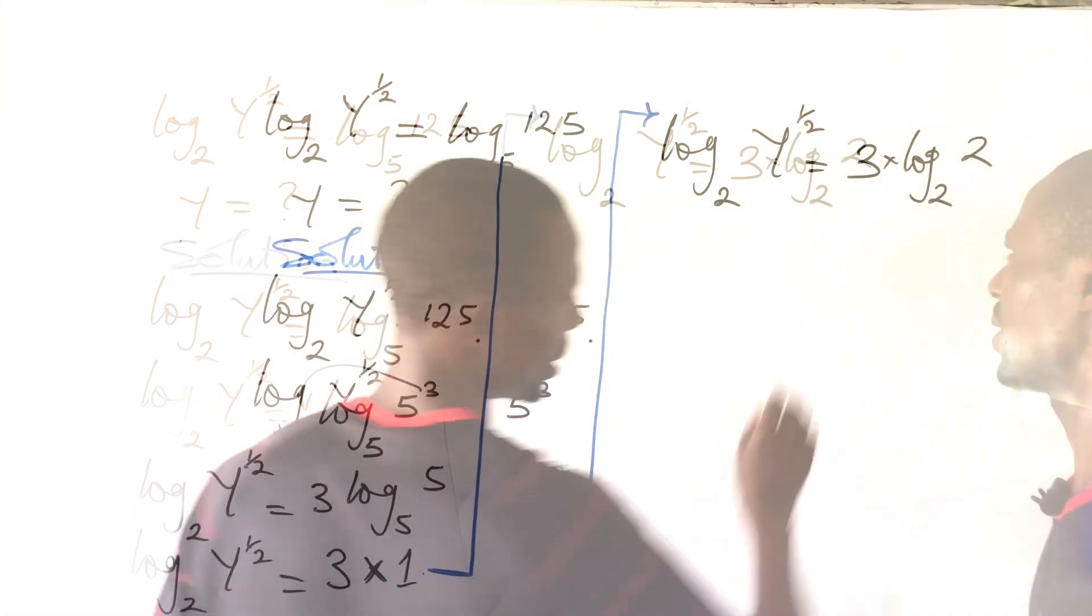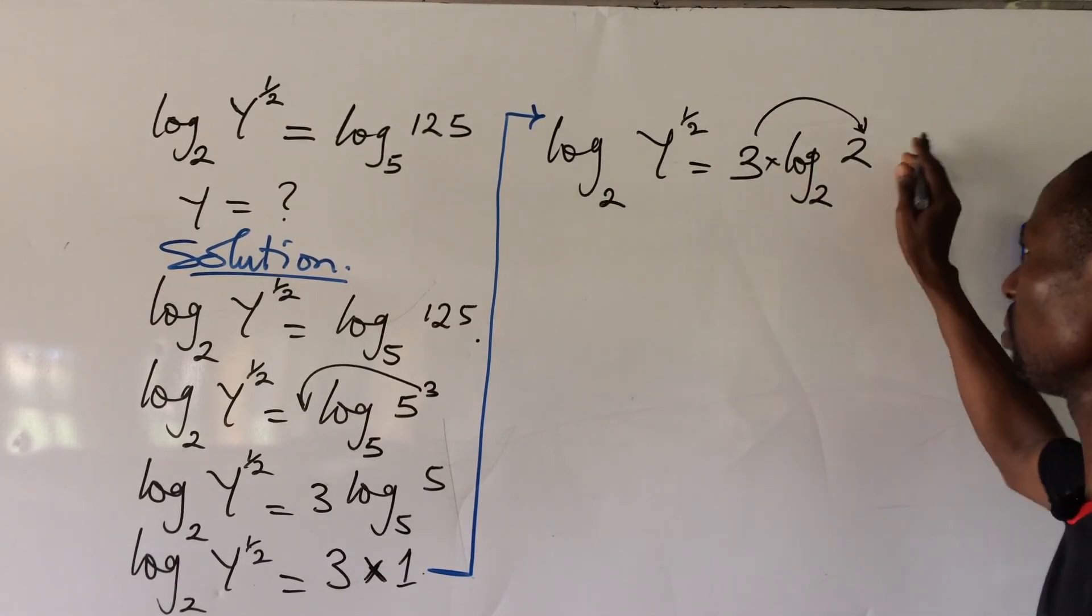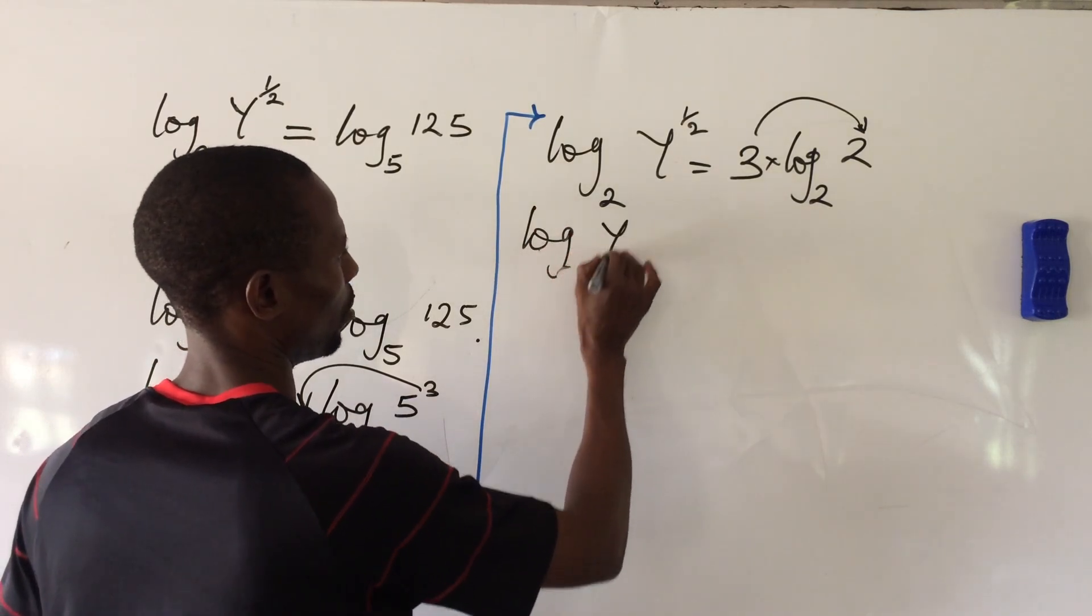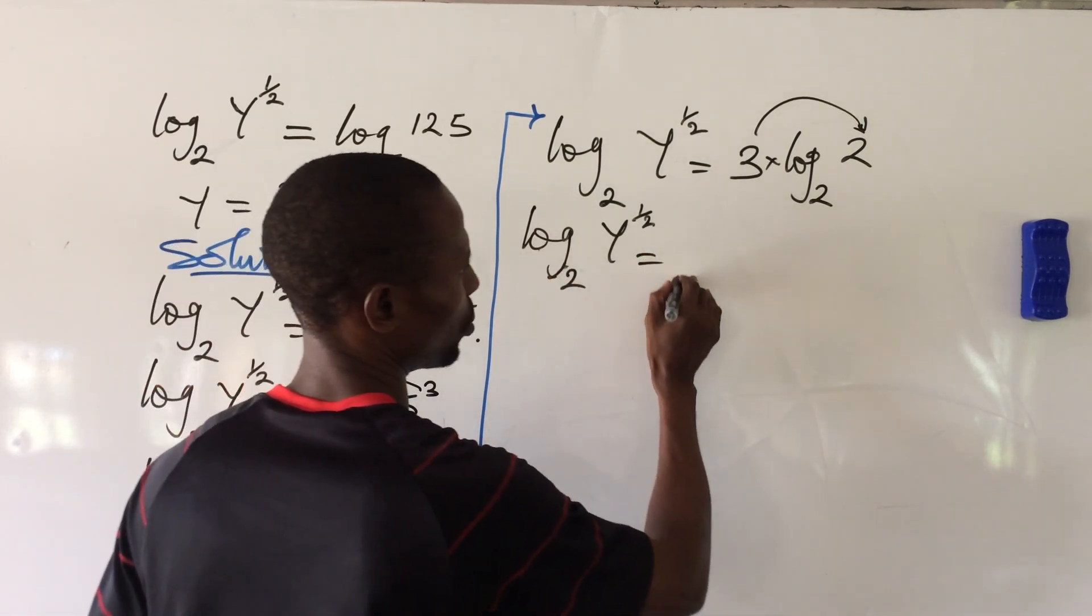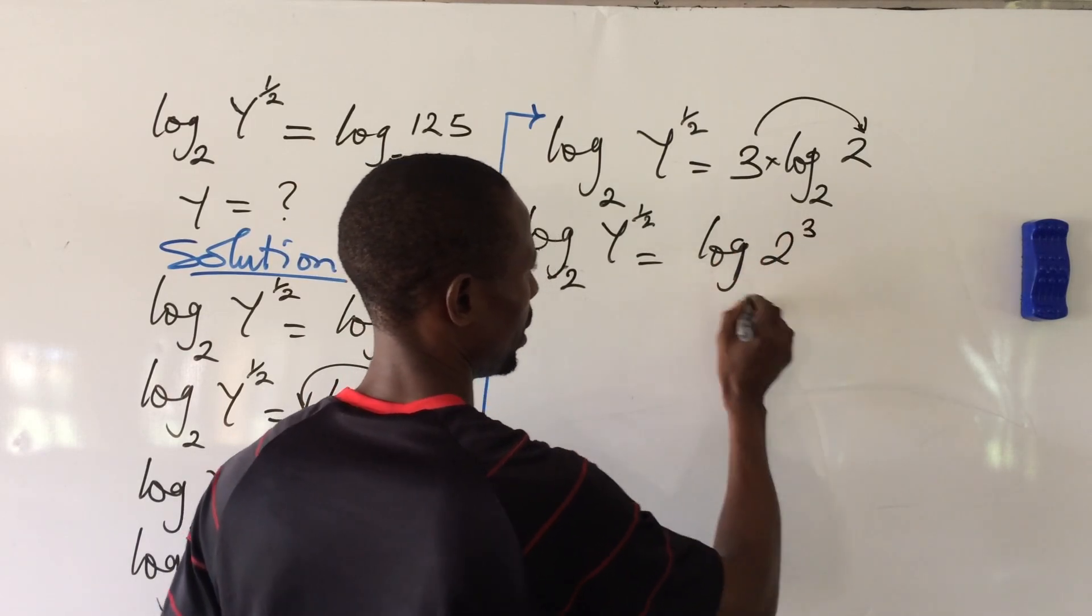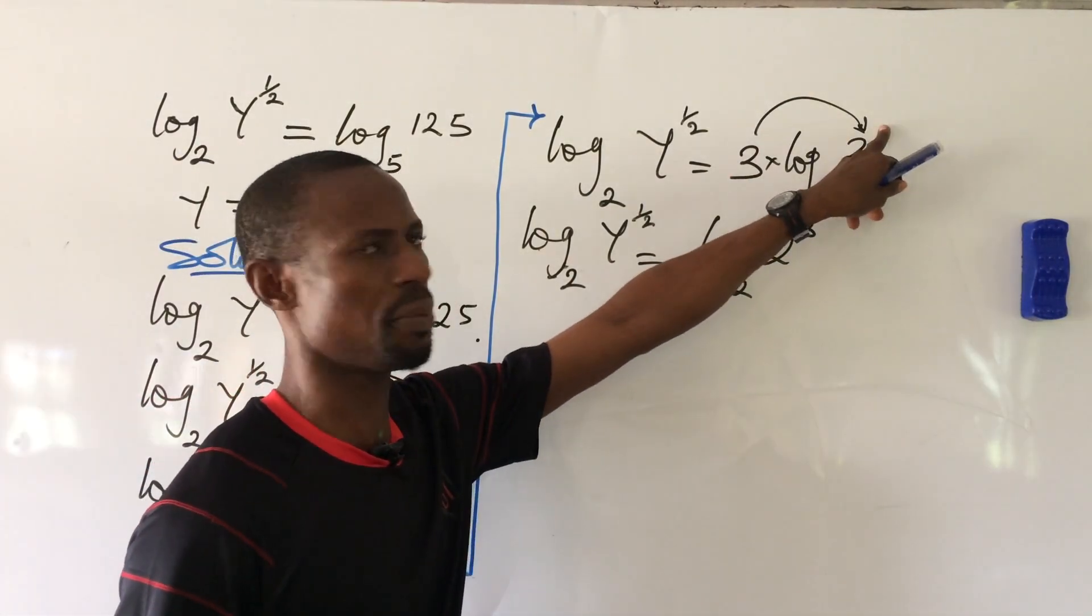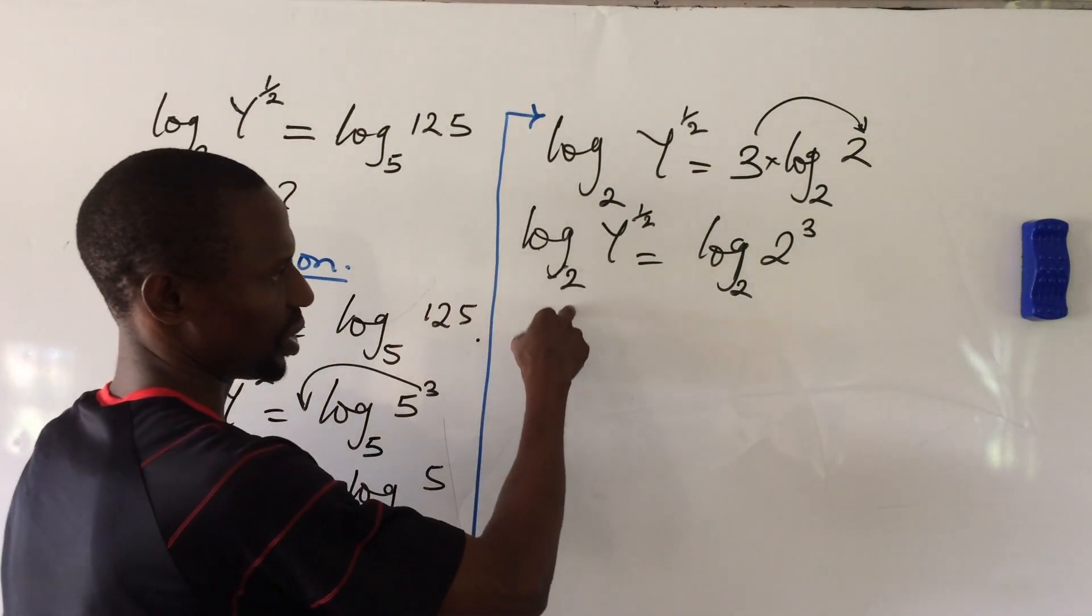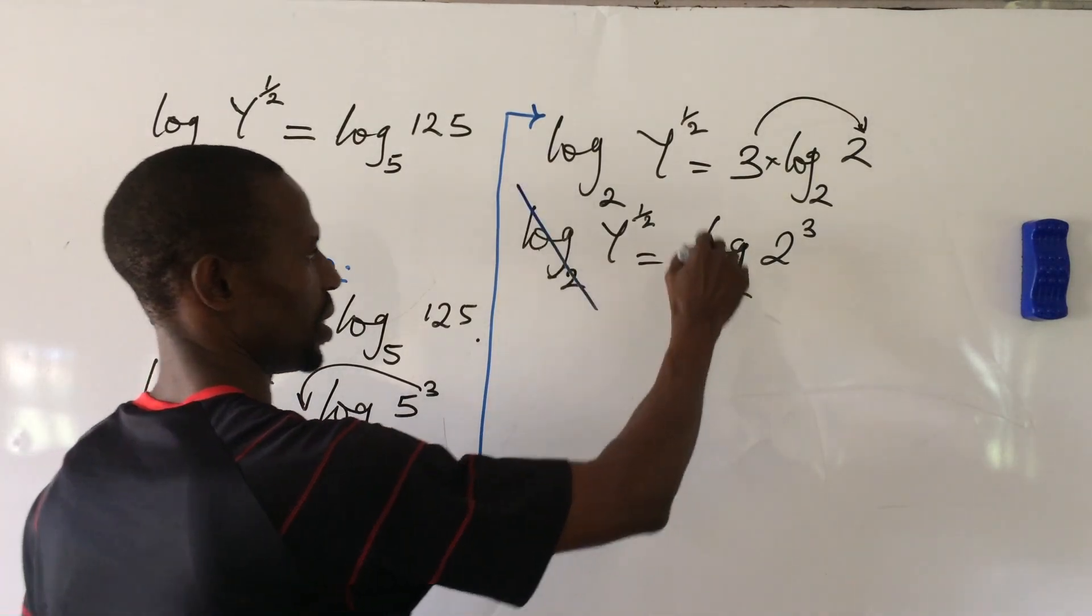So if we do that, let's take this 3 back here. If we move it here, we're now going to have log y to the power of 1/2 base 2 equals log 2 to the power of 3 base 2. We succeeded in moving this 3 up here. Now we are having log base 2 on both sides, so the bases are the same.